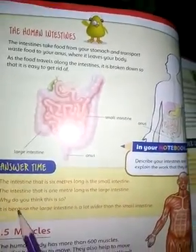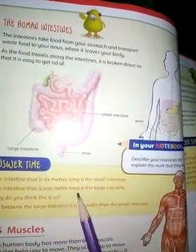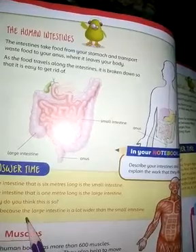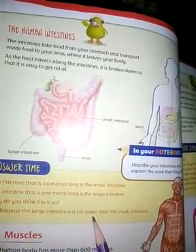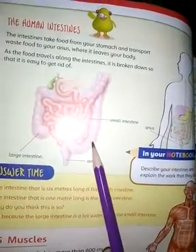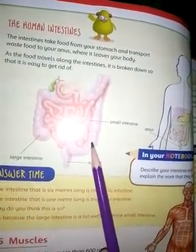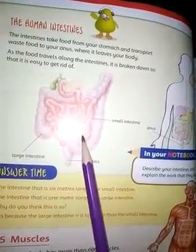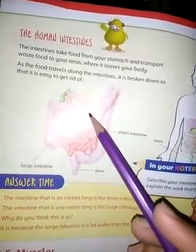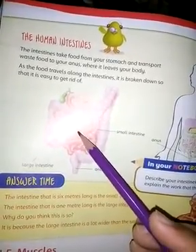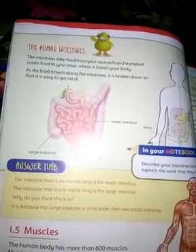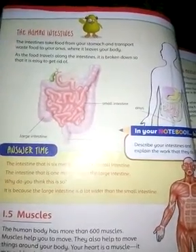The intestine that is six meters long is the small intestine, and the intestine that is one meter long is the large intestine. Why? It is because the large intestine is a lot wider than the small intestine. The large intestine is open and wider compared to the small intestine. You can see how it connects to the stomach, absorbs what's needed, and releases the rest from the body.